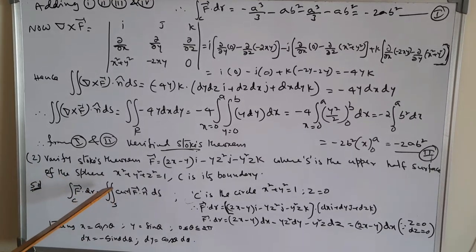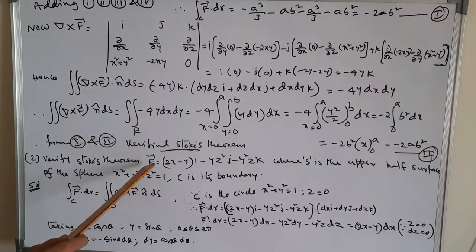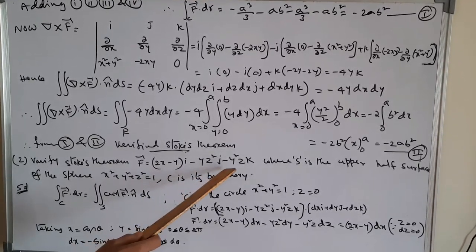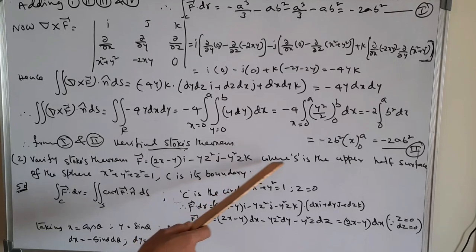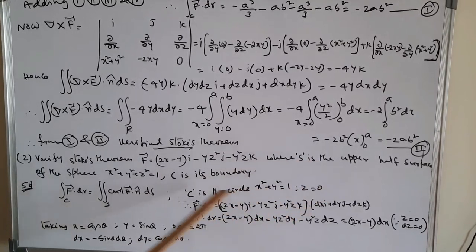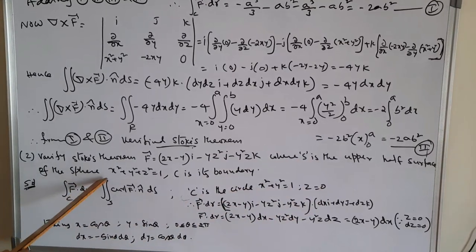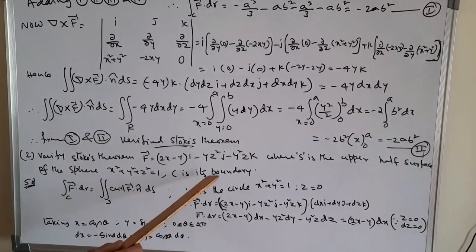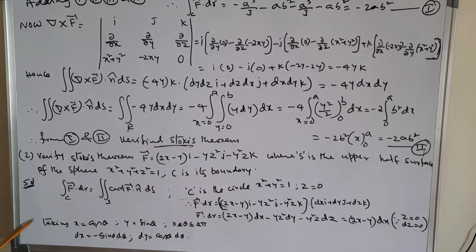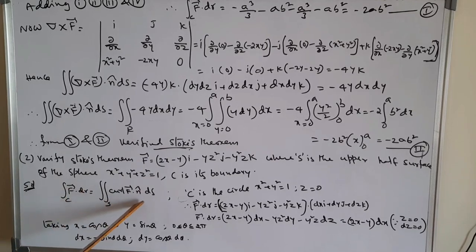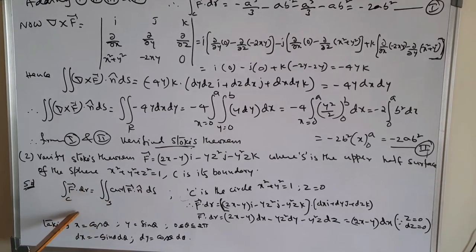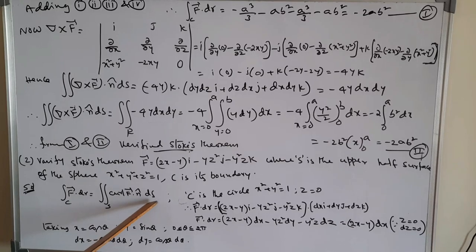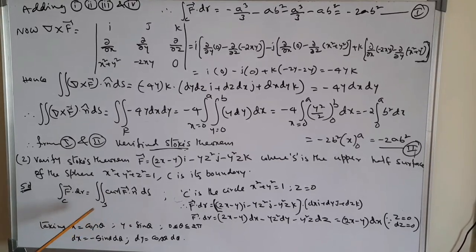Next problem: verify Stokes theorem for F̄ = (2x − y)i − yz²j − y²zk, where S is the upper half of the surface of the sphere x² + y² + z² = 1, and C is its boundary. The Stokes theorem statement: integral of F̄ · dr over C equals double integral of curl F̄ · n̂ ds over surface S.